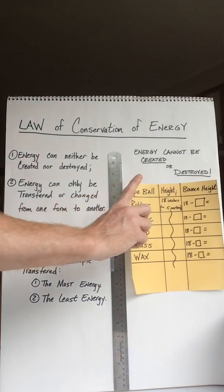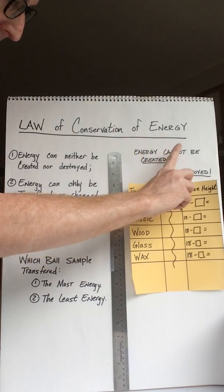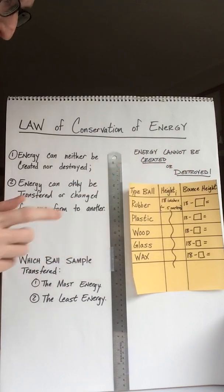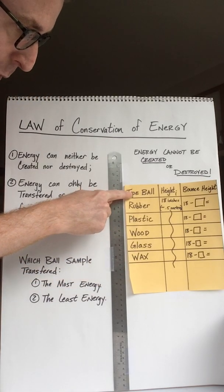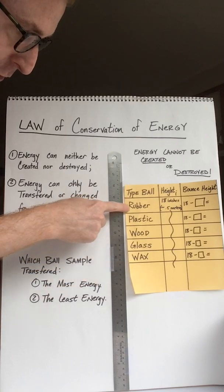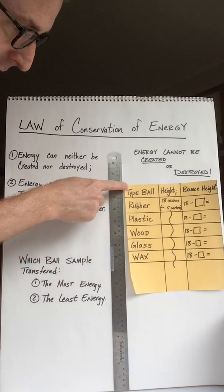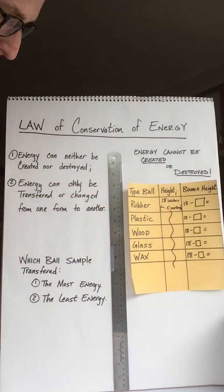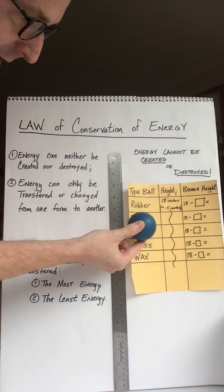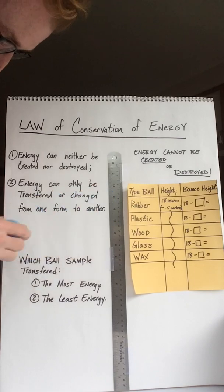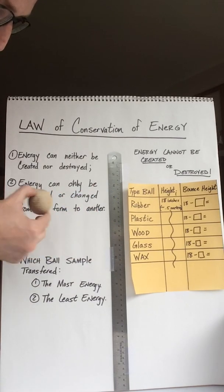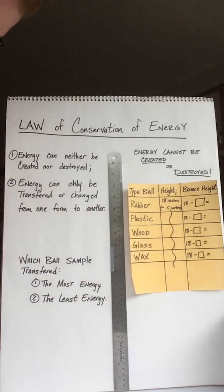In your data sheet or in your journal I recommend you write down whatever type of ball materials you find, with the type of ball. I had my rubber ball, plastic ball that's the form of the cat toy, the wooden ball, the glass marble, and the wax ball.